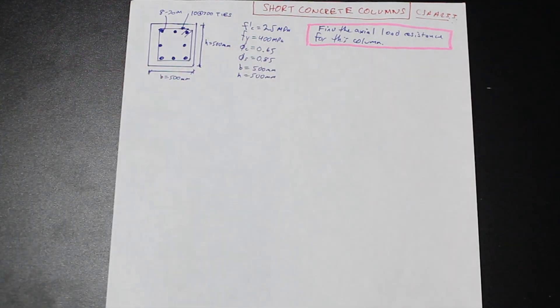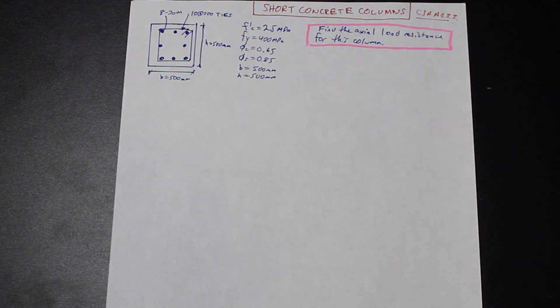So in this case, there's a method for determining slender columns, but for here, we're just going to assume this is a short column.